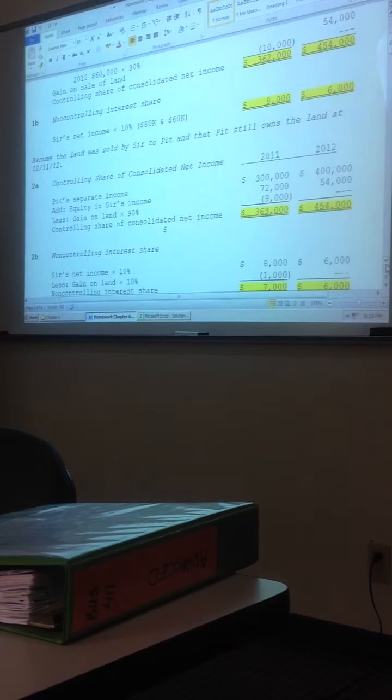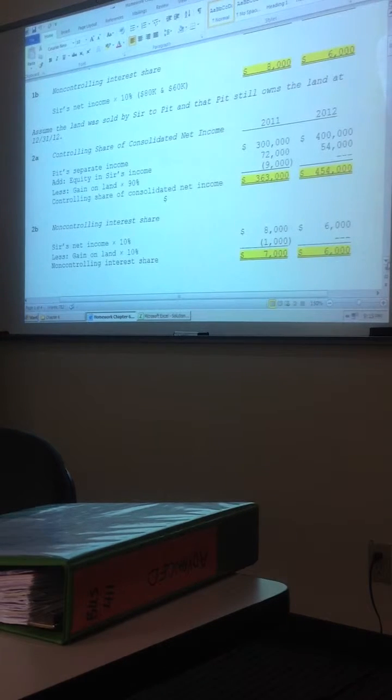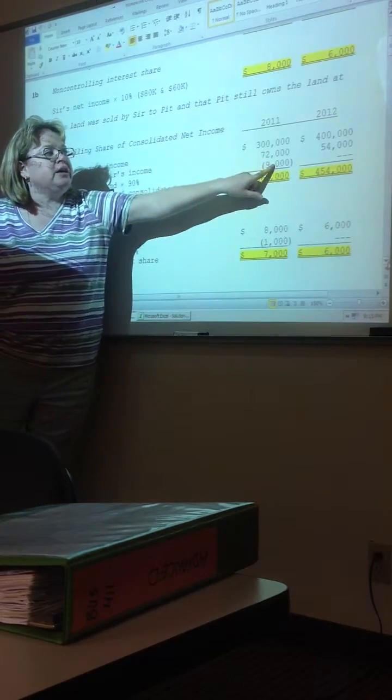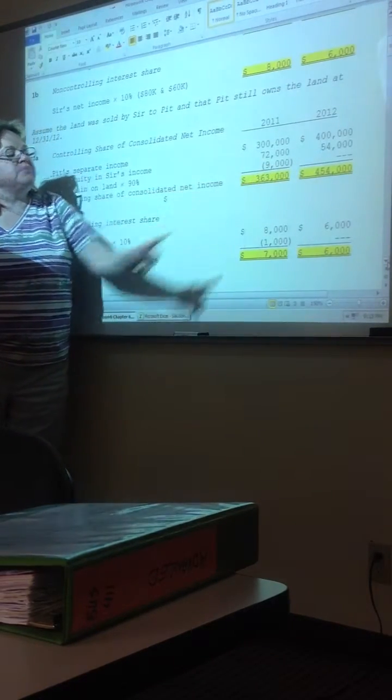But then part two, we're going upstream. So parent's separate income, what we own is the subsidiary's income, and now we're going to take out 90% of that gain on land because it's upstream.